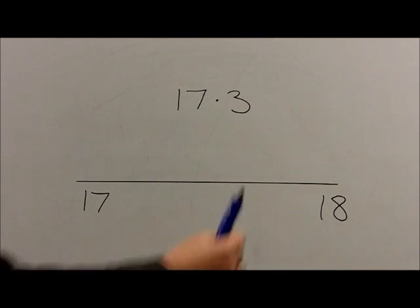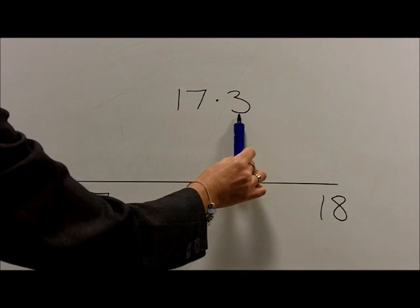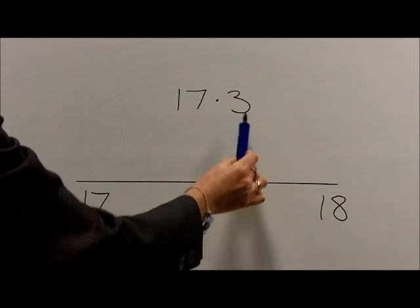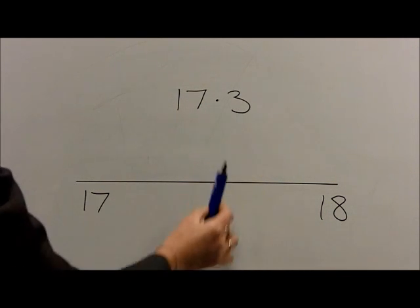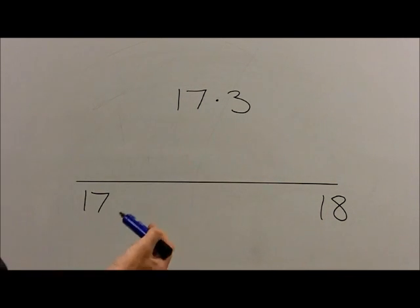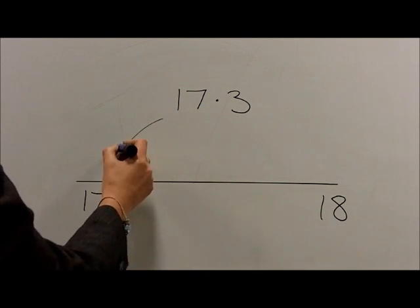We then look at the digit in the tenths column to make our rounding decision. With this number being 3, this value will be rounded down to the nearest whole number. Therefore, 17.3 rounds down to 17.